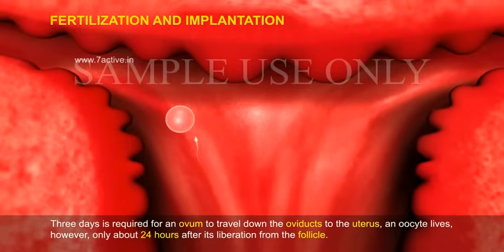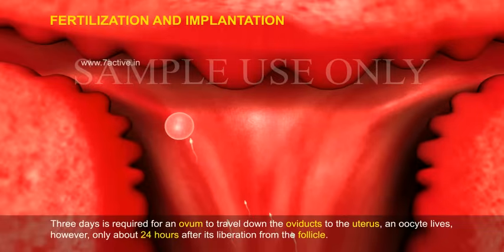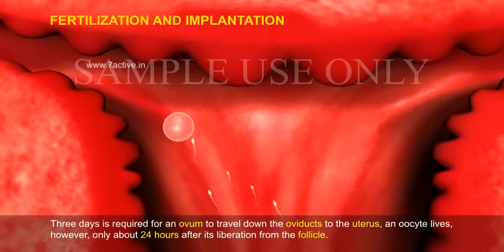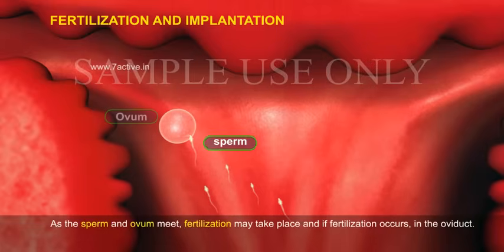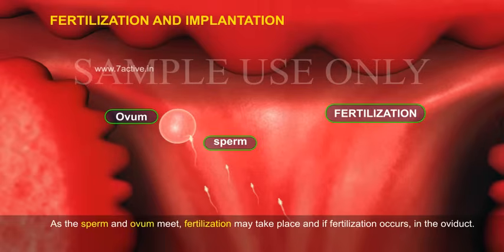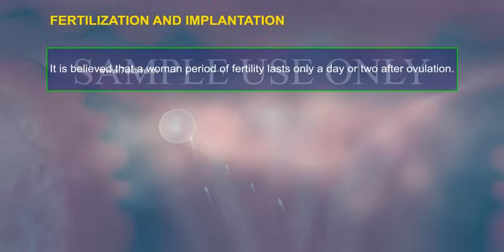Three days is required for an ovum to travel down the oviduct to the uterus. An oocyte lives however only about 24 hours after its liberation from the follicle. As the sperm and ovum meet, fertilization may take place, and if fertilization occurs in the oviduct, it is believed that a woman's period of fertility lasts only a day or two after ovulation.